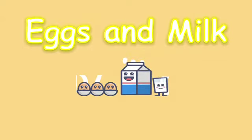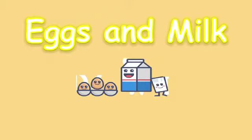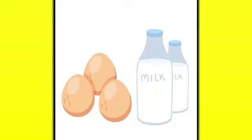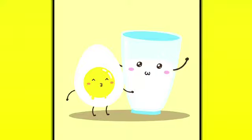The next thing which is important for your health is eggs and milk. You should eat an egg every day and drink a glass of milk every day. This is healthy food and it is good for your health. Fruits, vegetables, eggs, and milk are all healthy foods.